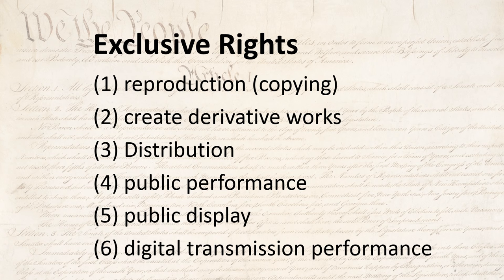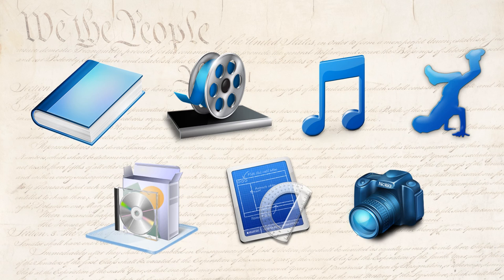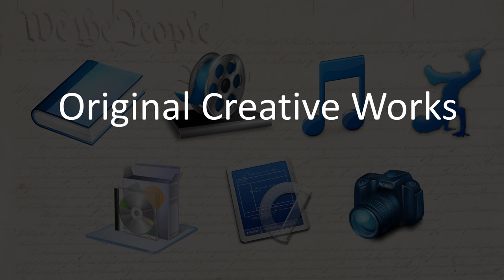These are all the exclusive rights of the person who holds the copyright of a work. So what kinds of things are protected by copyright? Movies, stories, poems, music, dance moves, any kind of pictures, artwork, architecture, and software. All of these are considered to be creative works, and creative works are protected by copyright.